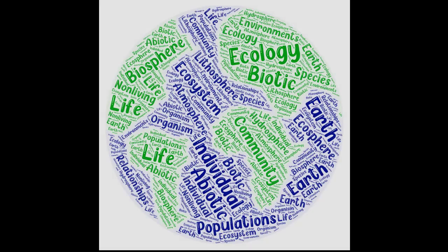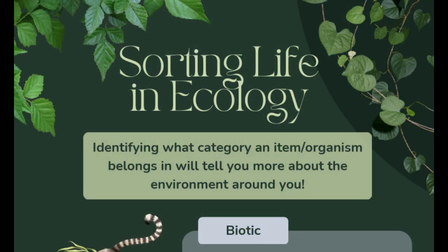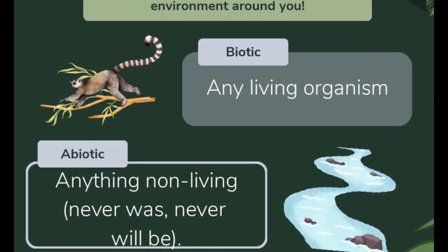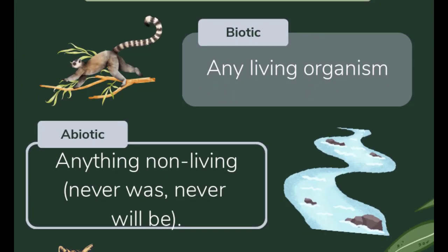What is ecology? Ecology is the study of the environment. The prefix eco means environment and the suffix ology means the study of something. In ecology, there are categories for everything to be sorted into. There's abiotic, which is anything that's not alive and never will be, such as a table or chip.